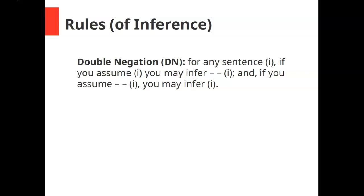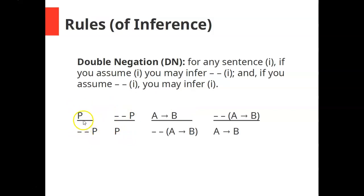The fourth and final rule we're going to add is double negation, which is what we call a replacement rule, because you can do two different things with it — you can exchange one sentence for another and vice versa. For any sentence, if you have it, you may infer not-not of it; and if you have not-not of it, you may infer the sentence itself. P and not-not-P are logically equivalent — two negatives do equal a positive, so to speak. So if you have P, you're allowed to infer not-not-P, and vice versa. Same with more complex sentences like (if A then B): you can infer not-not (if A then B). That's the rule of double negation, our only replacement rule.